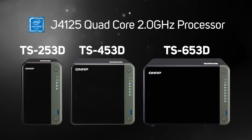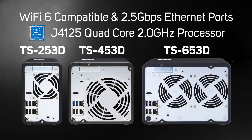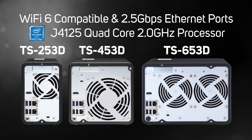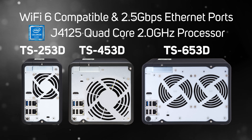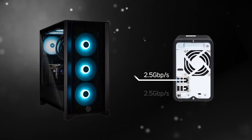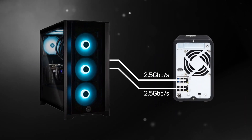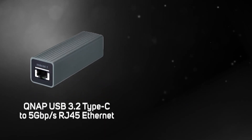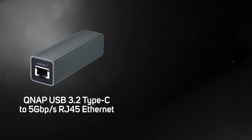J4125 quad-core 2.0 GHz processor and have next-gen Wi-Fi 6 and 2.5 Gigabit Ethernet connectivity. You can also get up to 5 Gbps transfer speeds if your laptop or PC is compatible, by setting port trunking with the two built-in 2.5 Gigabit Ethernet LAN ports, or you could use QNAP's 5 Gigabit Ethernet adapter or